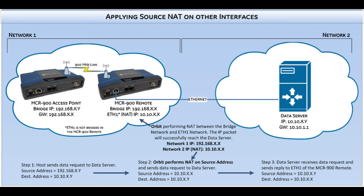If NAT was not enabled on the remote, the data center would try to reply using the destination address of 192.168.x.y. It would not know where to send this packet, so it would be sent out its default gateway, and the MCR900 access point would never get the requested data. That's all for how source NAT works in the Orbit MCR. For additional information, please visit our website at www.gemds.com.